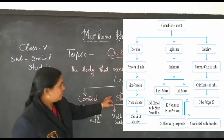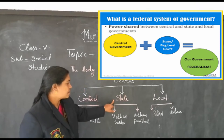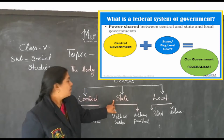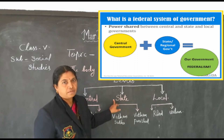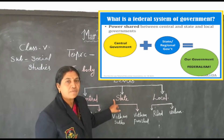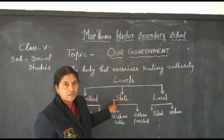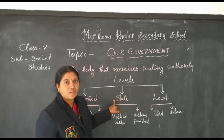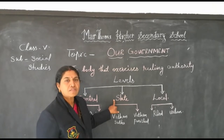The next level is called state government. The state government is for the state. That means our country is divided into many states, and each state has a government. That government is the state government, and it works for the development of the state.